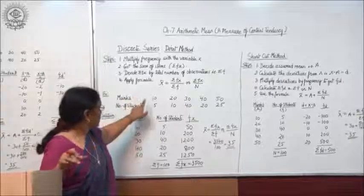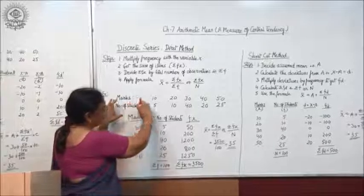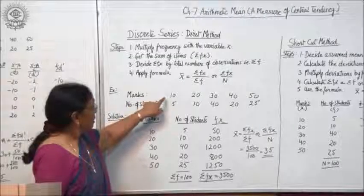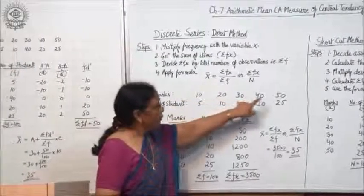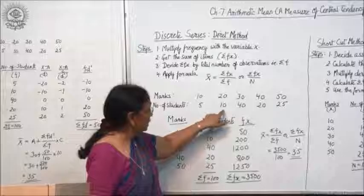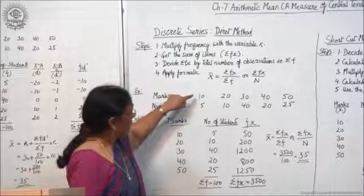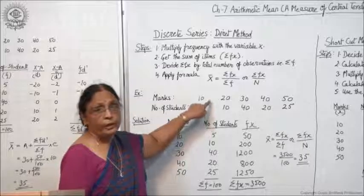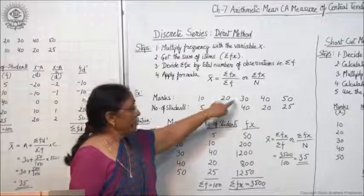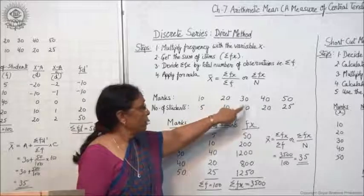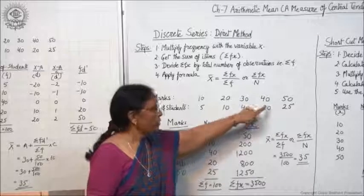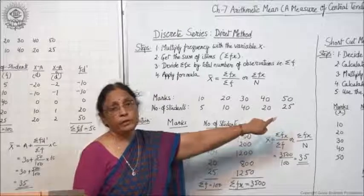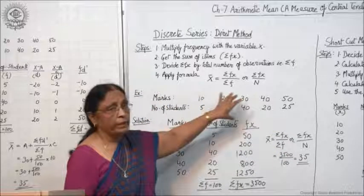Here, what does this data mean? These are the marks 10, 20, 30, 40, 50, scored by these number of students. For example, 10 marks have been scored by 5 children, 20 marks by 10, 30 marks by 40, 40 marks have been scored by 20 children, and 50 marks have been scored by 25 children. So this is the data given to you.